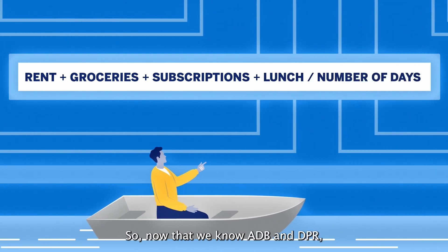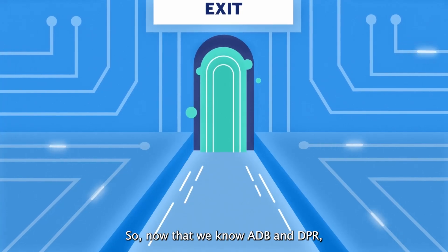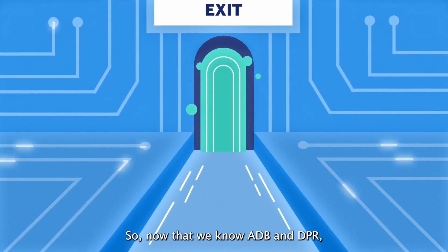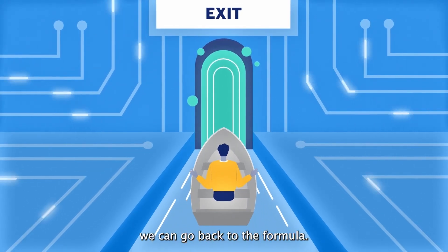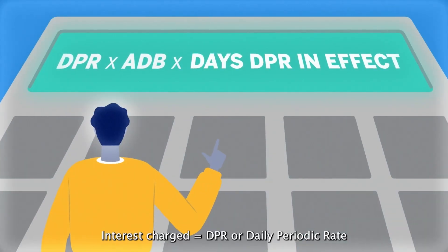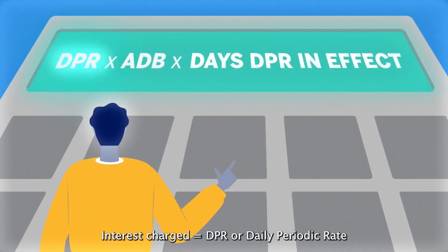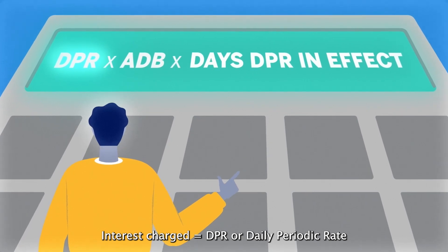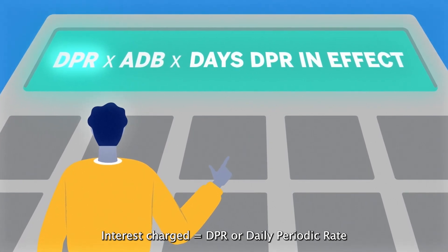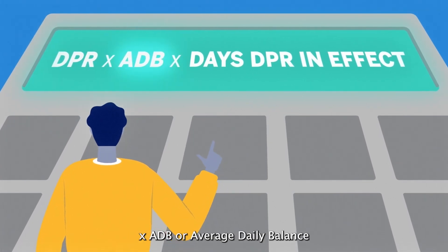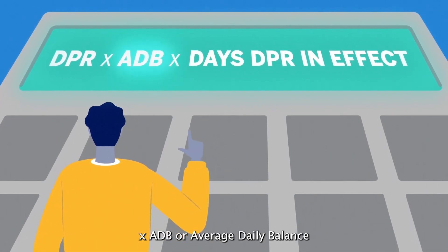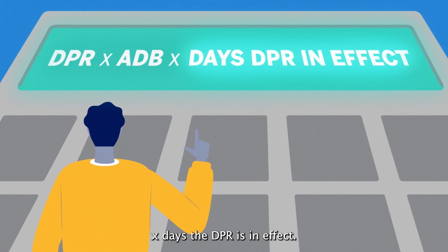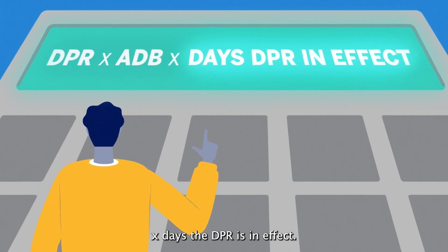Now that we know ADB and DPR, we can go back to the formula. Interest charge equals DPR, or daily periodic rate, times ADB, or average daily balance, times days the DPR is in effect.